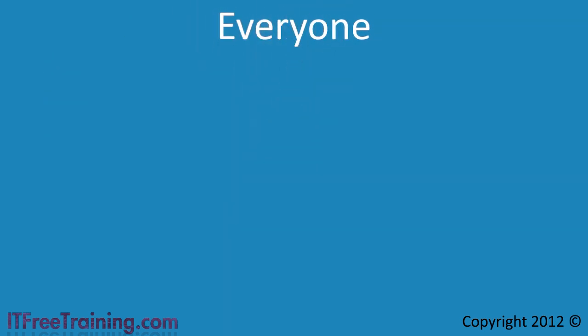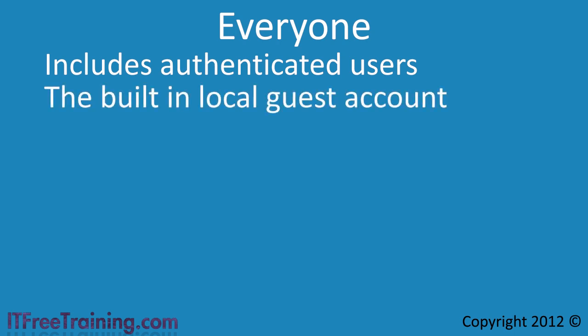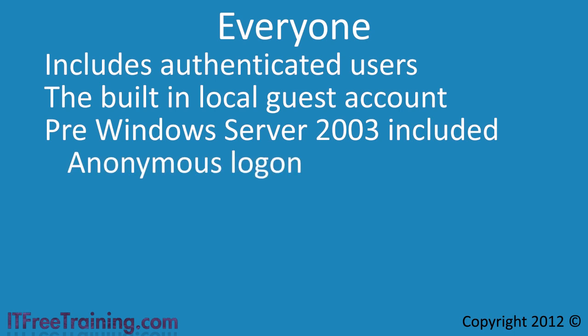The next special identity is everyone. This includes everyone included in authenticated users, that is all users from all trusted domains and the built-in guest account. If you want to give access to everyone in the organization or from trusted external domains, you would use everyone. If you were using a system before Windows Server 2003, that is Windows 2000 or Windows NT, everyone also includes anonymous access. This is an important fact to remember if you have an old system.